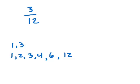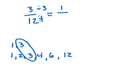The greatest common factor that they have is 3. So, what you can do is you can divide a 3 out of each of these, and 3 divided by 3 would get you 1, 12 divided by 3, that would get you 4. So, 3 twelfths in simplest form would be 1 fourth.